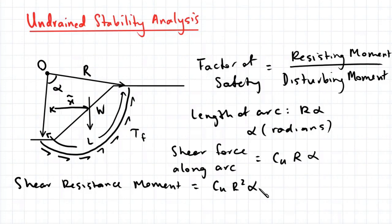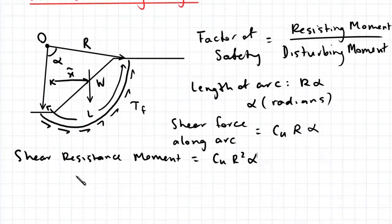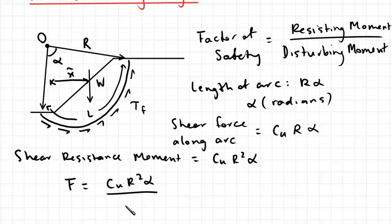The disturbing moment is due to the weight of the soil element, W multiplied by the lever arm x. This gives us the factor of safety F equals Cu·r²·alpha divided by W multiplied by x.